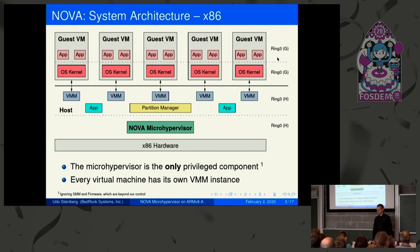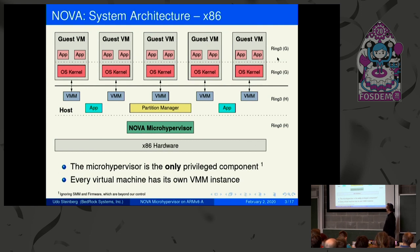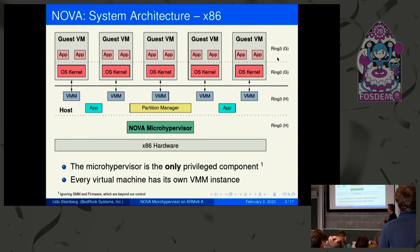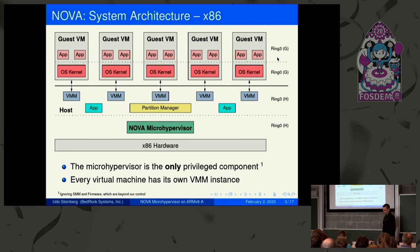With virtualization, those rings are now called guest rings — ring 0G and ring 3G — and you get the same set of rings duplicated for host mode: ring 0H and ring 3H. Ring 0 host is occupied by the Nova microhypervisor, and ring 3 host is occupied by what we call hyperprocesses. The entire Gnode framework runs in ring 3 host. Nova is the only component that runs privileged.